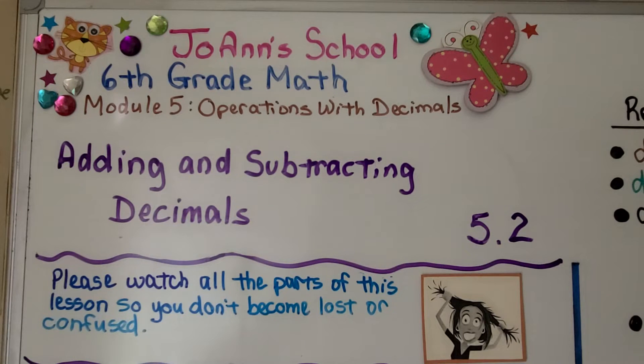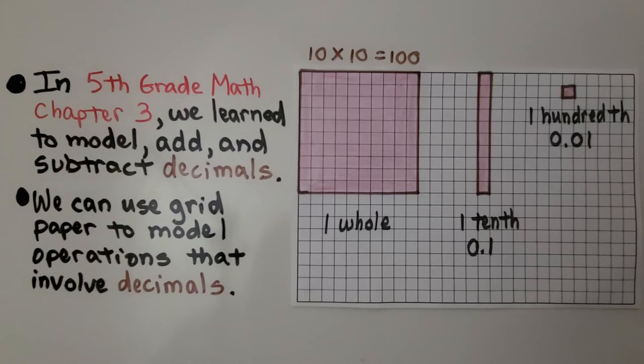Lesson 5.2 Adding and Subtracting Decimals. In 5th grade math, chapter 3, we learn to model, add, and subtract decimals. We can use grid paper to model operations that involve decimals.